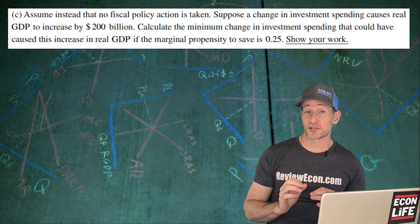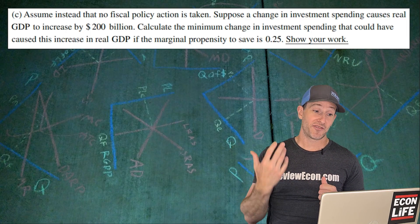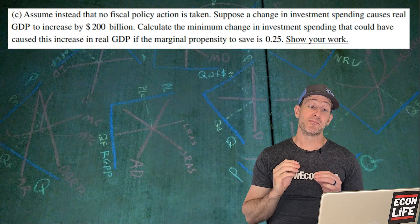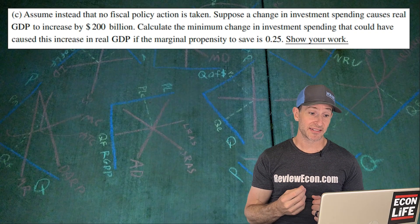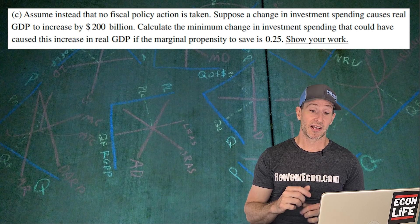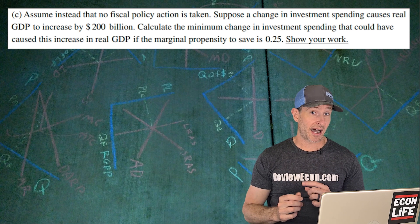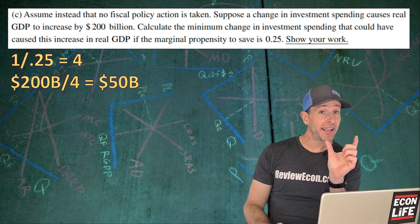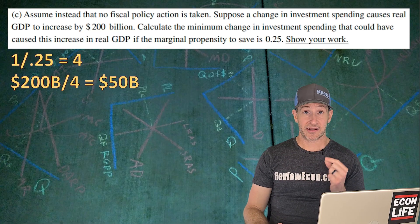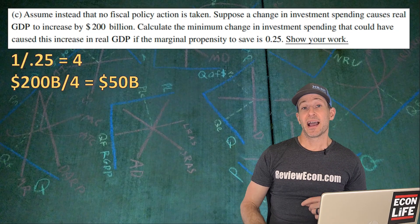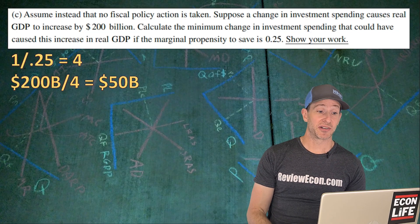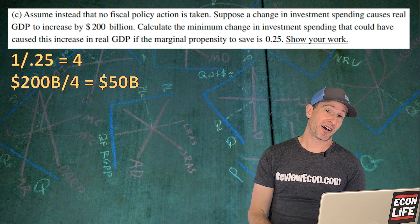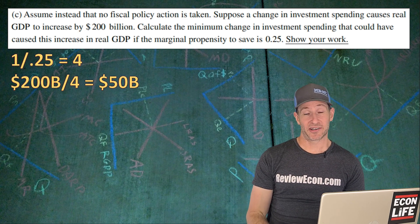Next, we're going to assume that no fiscal policy action is taken, but there's a change in investment that has a final impact of $200 billion on real GDP. We're going to calculate the minimum change of investment that could have caused that increase, assuming a marginal propensity to save of 0.25. So the spending multiplier is one divided by the MPS of 0.25, which gives us a multiplier of four. You take that final change of $200 billion divided by that multiplier of four, and that is an original change of investment of $50 billion.